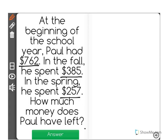Let's visualize this. So Paul starts with $762. This is where his bank account is at the beginning. Then what happens is he spends $385.